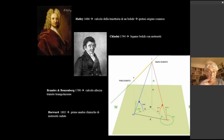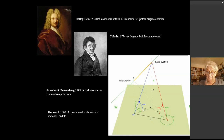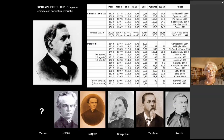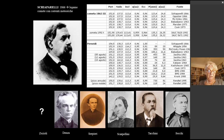Chladni poi stabilì il legame tra i bolidi e i meteoriti, e Brandes e Benzenberg alla fine del 1700 riuscirono poi a calcolare l'altezza da un'osservazione simultanea. Veniamo a Schiapparelli: fu il primo che riuscì a mettere in evidenza il rapporto tra le comete e le correnti meteoriche, confrontando gli elementi orbitali della cometa Swift-Tuttle con quelli dei meteoroidi delle Perseidi, dimostrando che le Perseidi derivavano dalla cometa Swift-Tuttle.